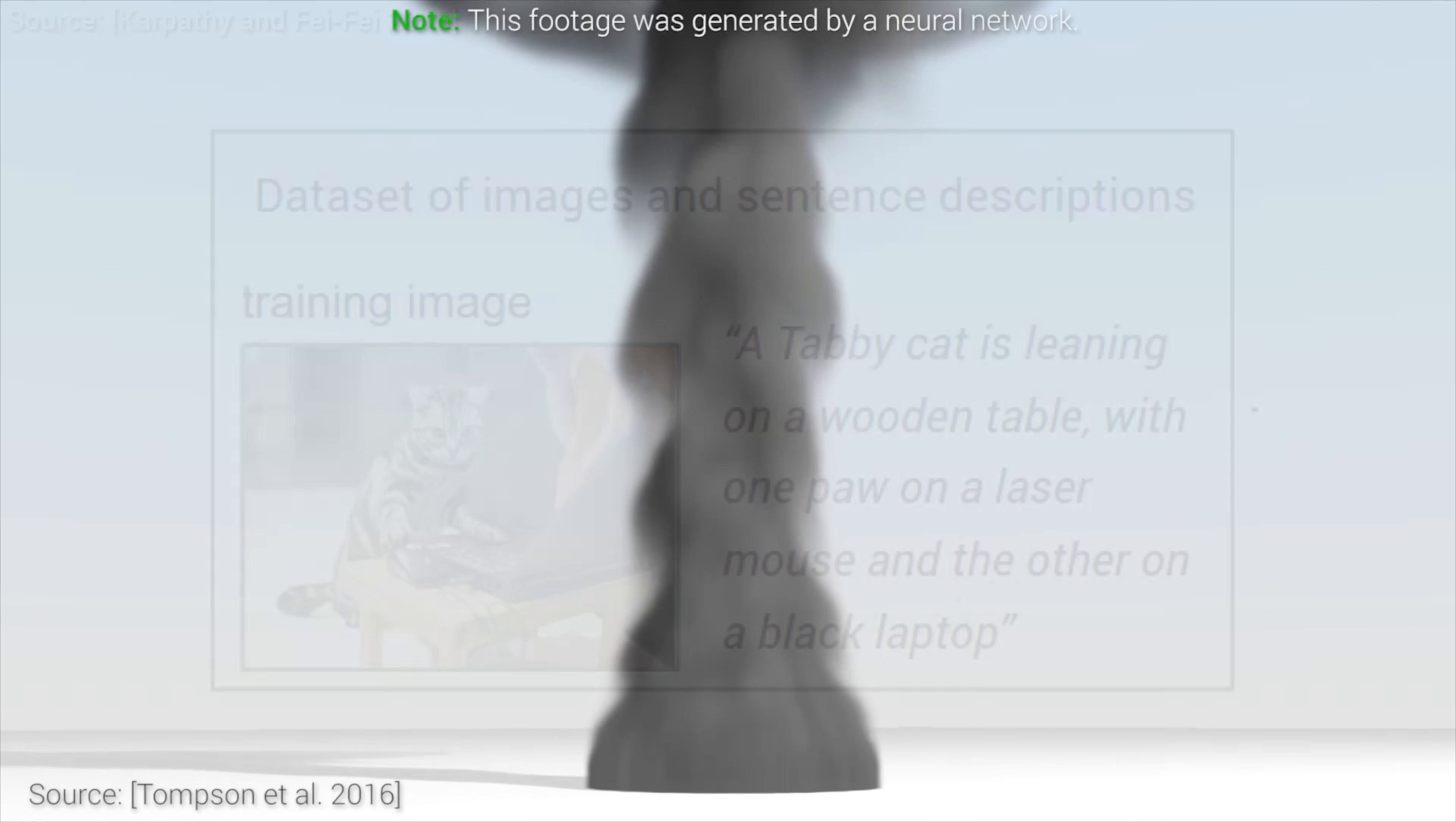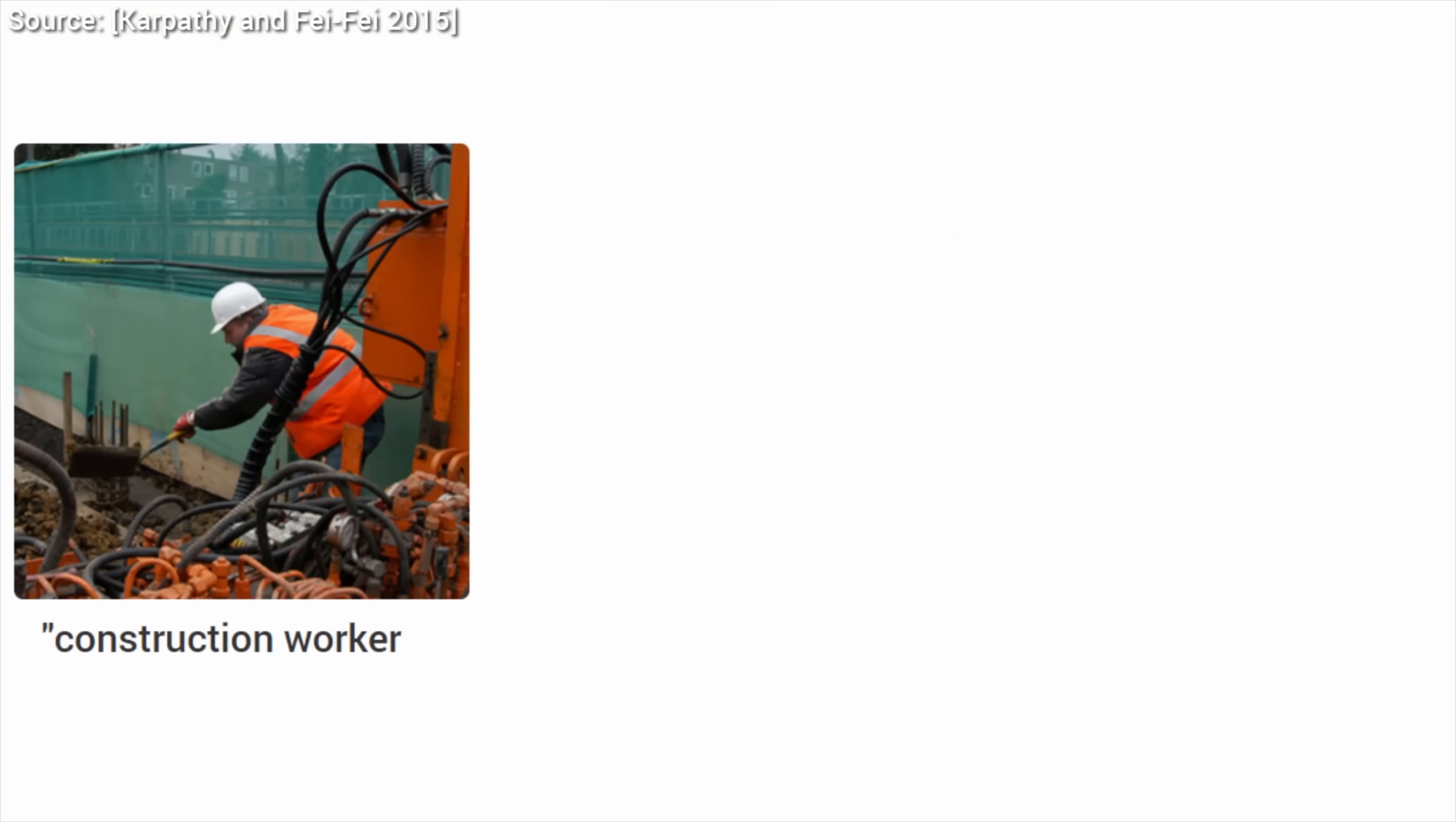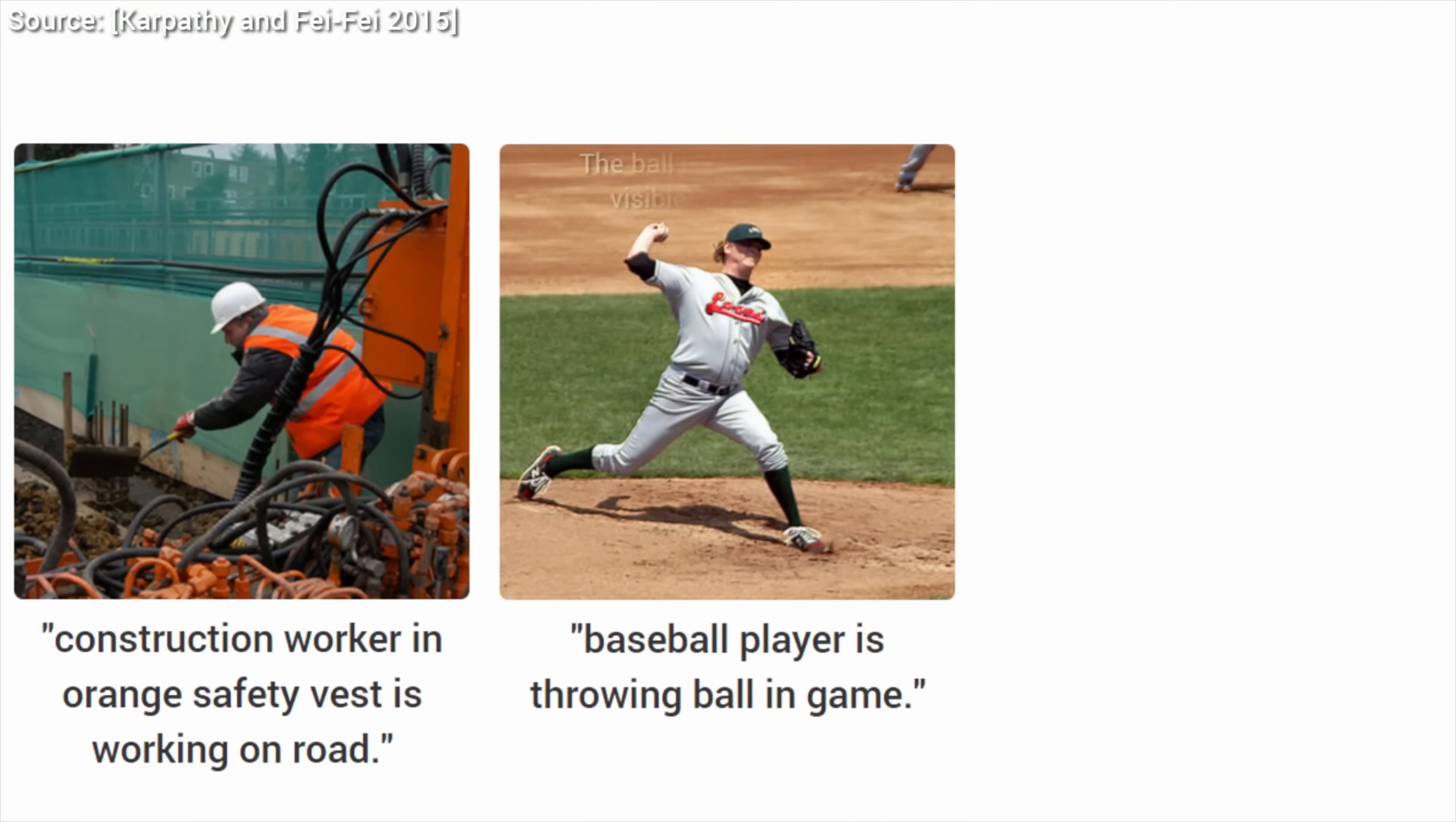This definitely is an interesting take, as normally, we use neural networks to solve problems that are otherwise close to impossible to tackle. For instance, it is very hard, if not impossible, to create a handcrafted algorithm that detects cats reliably because we cannot really write down the mathematical description of a cat. However, these days, we can easily teach a neural network to do that. But this task here is fundamentally different.